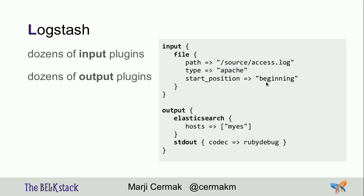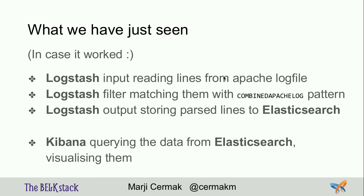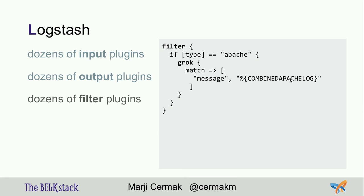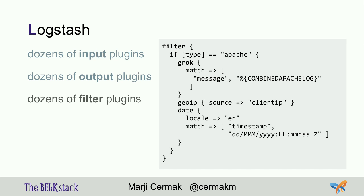My config file told Logstash to use the Apache access log as source, starting from the beginning — because Logstash reads from where it started, so for an old file you have to force it to re-read from the beginning. The output goes to Elasticsearch. For the filter: if type is Apache, use the Grok pattern to match combined Apache log. Also apply the geo IP plugin on the clientip field, and handle the date so each log gets its original timestamp rather than the processing time.